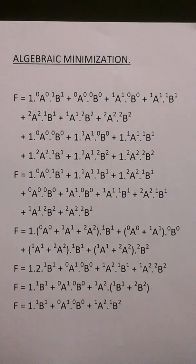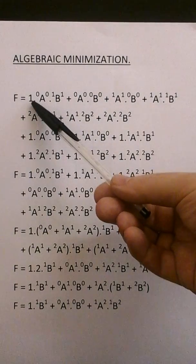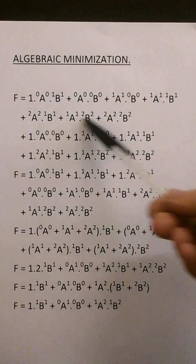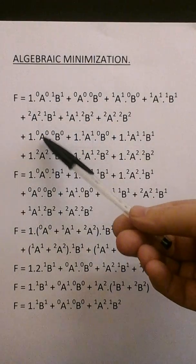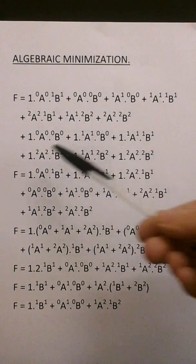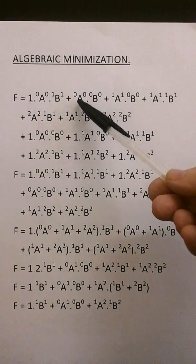This is the algebraic method of minimization. It looks a bit of a mess but it's quite simple. Here we have all the terms of the expression here and these are the redundant terms.